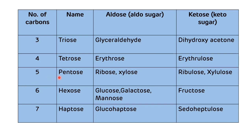If there are five carbon units, they are known as pentose. Examples of aldo-pentose are ribose and xylose; examples of ketose pentose are ribulose and xylulose. An example of keto-hexose is fructose. If there are seven carbon units, they are known as heptose. An example of aldo-heptose is glucoheptose; an example of ketose heptose is sedoheptulose.